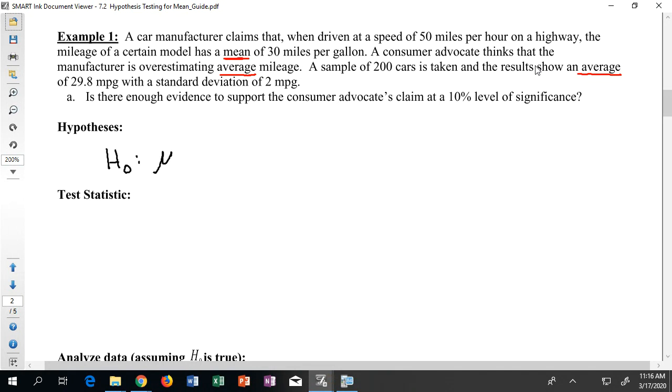Still going to have an H0, but now it's going to be talking about a mu and that's going to be squaring off against an H1, also talking about an average. Now I want to see what the consumer advocate claims. The consumer advocate thinks that the manufacturer is overestimating the mileage and the manufacturer said that it was 30 miles per gallon. So it seems like if the consumer advocate believes that the mileage is being overestimated, they would think that the actual average should be less than 30, right?